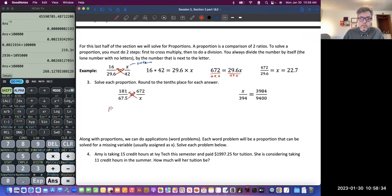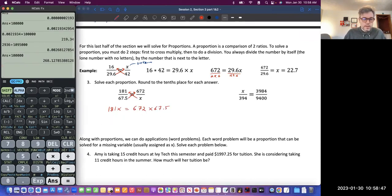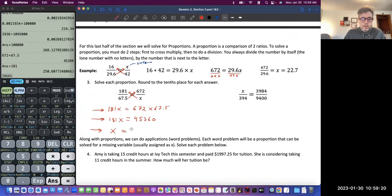So I'm going to cross multiply. That gives me 181x equals 672 times 67.5. So let's put that together, 672 times 67.5, there we go, 45360, 181 times x. All right, now I'm going to divide both sides by 181. So if I do that, 181, what do I get? 250.